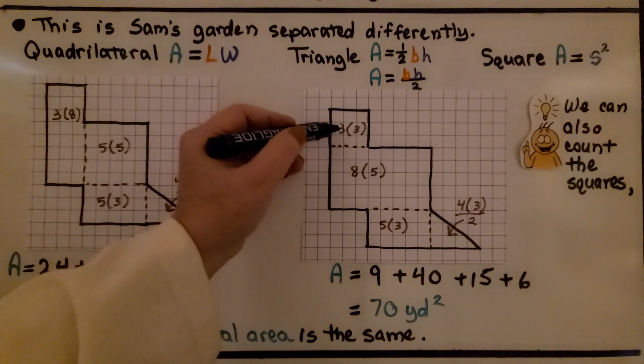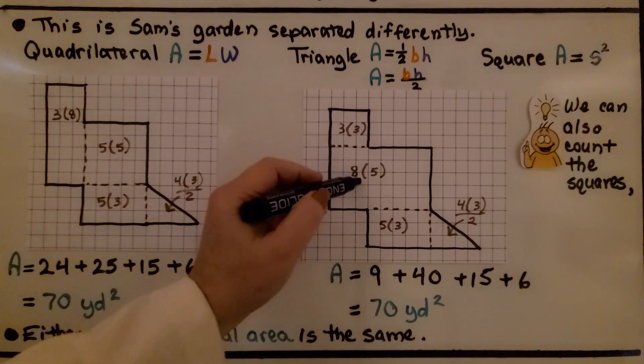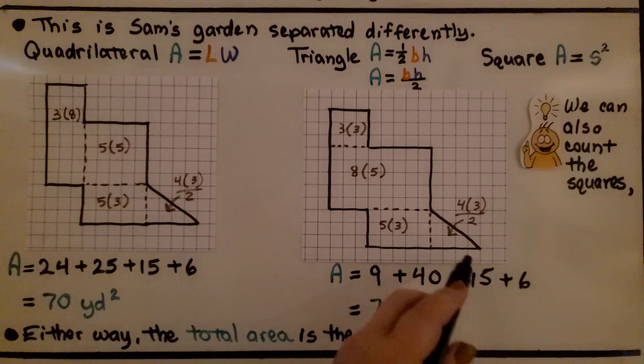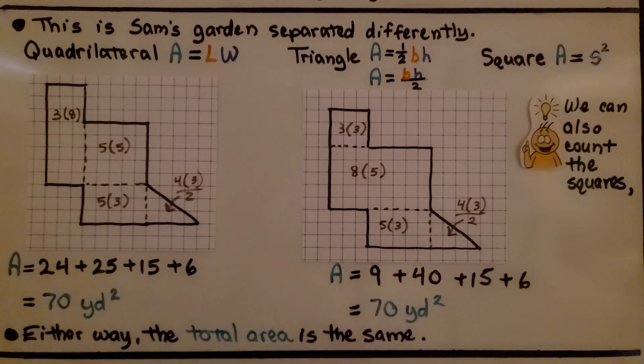Now, if we did it this way, we'd have 3 times 3, which is 9, 8 times 5, which is 40, 5 times 3, which is 15, and our 6 for our triangle. We'd still get 70 yards squared. Either way, the total area is the same.